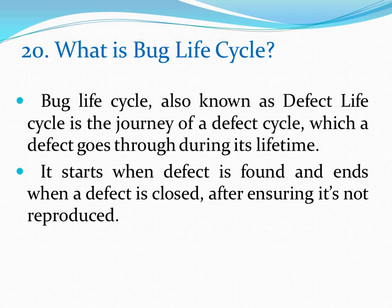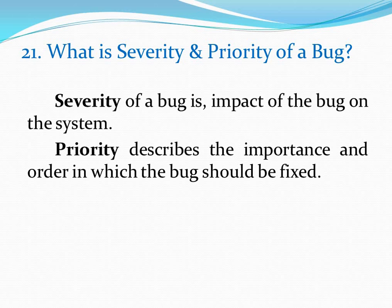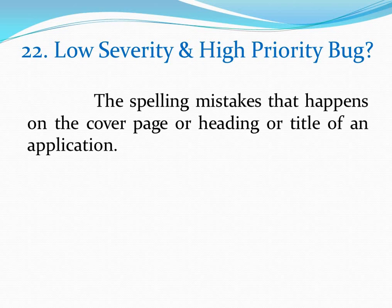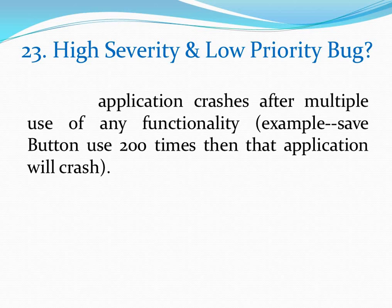What is bug life cycle? Bug life cycle, also known as defect life cycle, is the journey of a defect cycle which a defect goes through during its lifetime. It starts when a defect is found and ends when the defect is closed after ensuring it is not reproduced. What is severity and priority of a bug? Severity is the impact of the bug on the system. Priority describes the importance and order in which the bug should be fixed. Example of low severity and high priority: a spelling mistake on the cover page or title of an application. Example of high severity and low priority: an application that crashes after multiple uses of a functionality, such as after a save button is used 200 times.